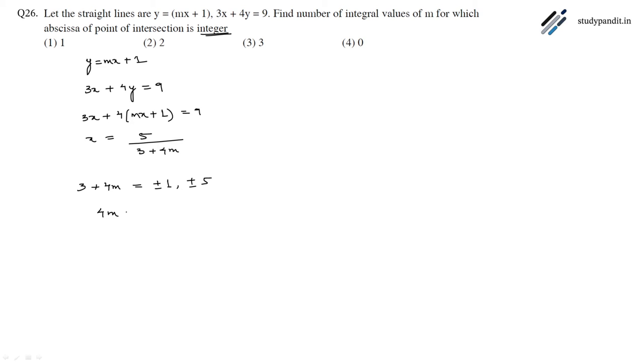So 4m equals minus 3 plus or minus 1 and minus 3 plus or minus 5. So 4m equals minus 4, minus 2, minus 8, and 2.